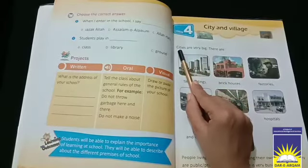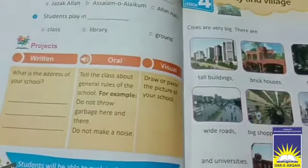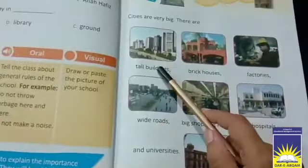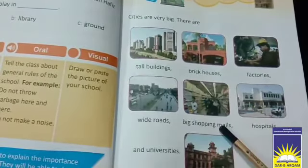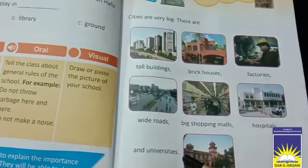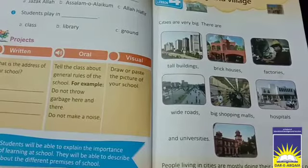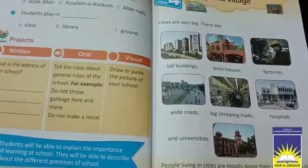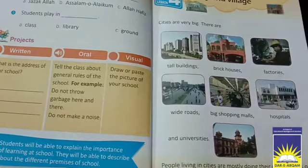Cities are very big. There are tall buildings, brick houses, factories, wide roads, big shopping malls, hospitals, and universities. There is a great difference in lifestyle among people living in villages and cities. Cities have more opportunities available for people, but villages have less opportunities.